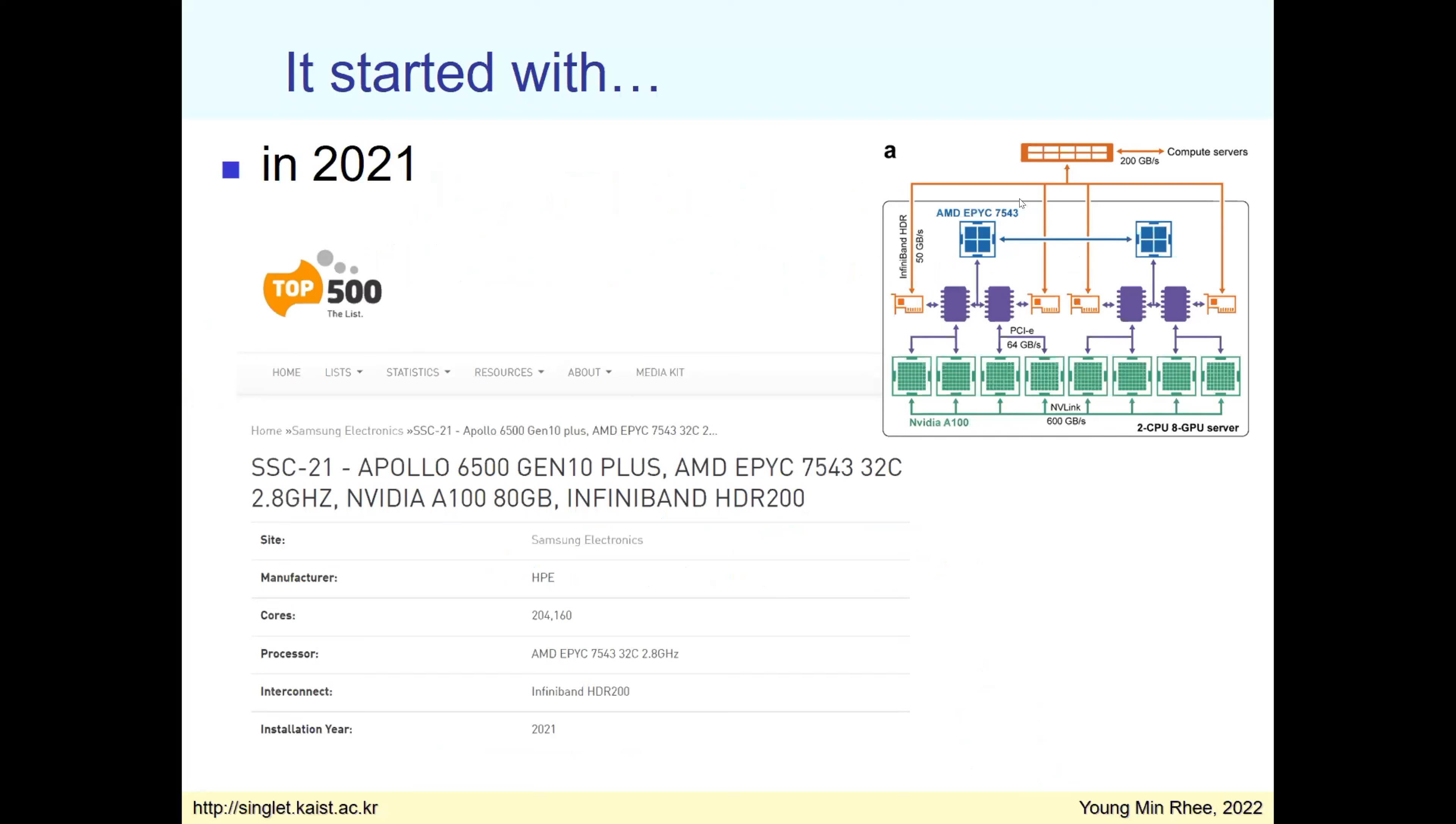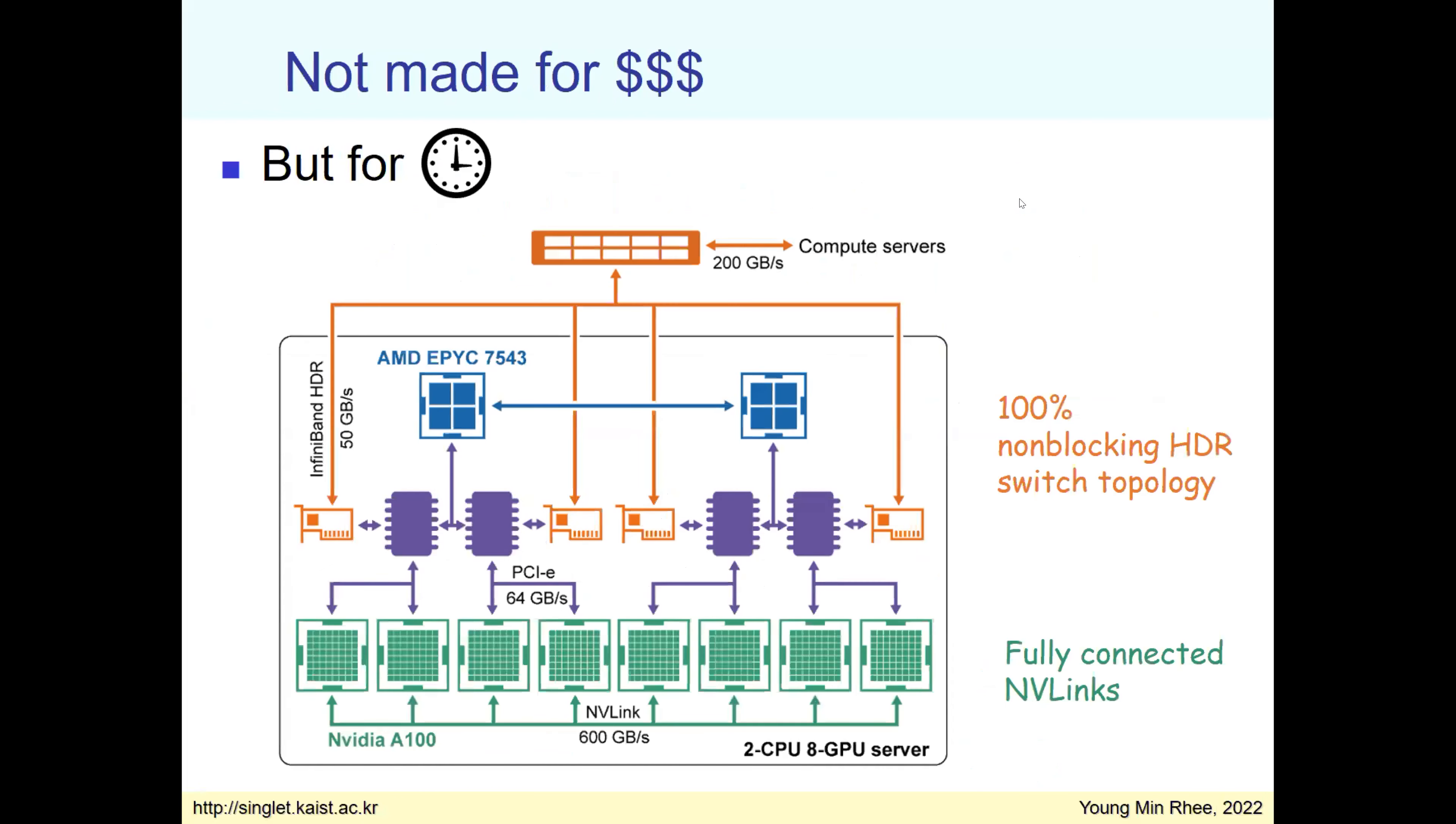So it actually started with the system that Samsung built last year. And when it was built, it was 11th under the supercomputer ranking. Now it's at the 18th position last month. And if you understand somewhat about the hardware construct, then you can easily see that it's a very expensive system. It is all connected by HDR InfiniBand and having a 100% non-blocking thing with HDR costs a lot of money. And it includes NVIDIA's 800 GPUs, eight on each system, and all the eight GPUs are connected through NVLink switch. That switch also is very expensive. So it's an expensive system.